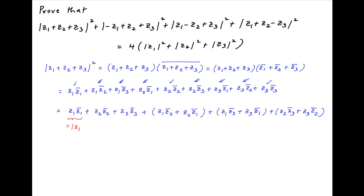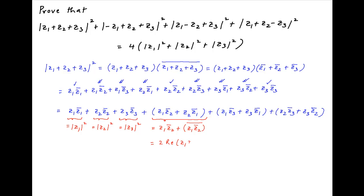Now z1 times its conjugate is equal to the square of the absolute value of z1. Similarly, the next term is equal to the square of the absolute value of z2, and the following term is the square of the absolute value of z3. The next term can be written as z1 times the conjugate of z2 plus the conjugate of z1 times the conjugate of z2, and this is equal to two times the real part of z1 times the conjugate of z2.